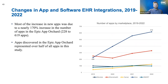Looking at the number of apps represented in each marketplace: over the course of the study period from 2019 to 2022, Epic represented most of the increase. Apps discovered in the Cerner gallery definitely increased substantially over this period, but started at a lower level. The increase in the Athena marketplace also went up in this time period. But really, the increase in the Epic App Orchard was substantial.